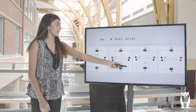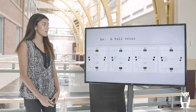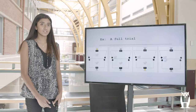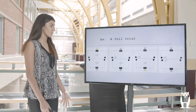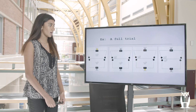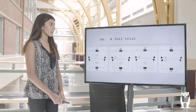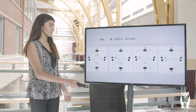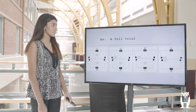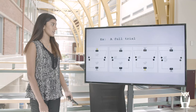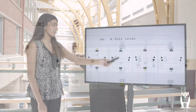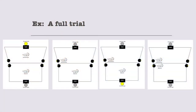Afterwards, a stimulus light would turn on on the bottom half of the chamber as an indication to the observer rat that the trial was going to start. Then finally, both lights would turn on on the bottom half of the chamber. In this case the observer rat went to the light on the left, which was the correct answer because that was the same light the demonstrator rat had gone to, and it received a sugar pellet.